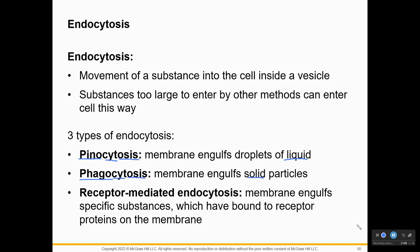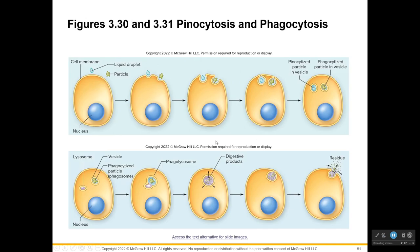Receptor-mediated endocytosis is where the membrane engulfs a specific substance because a receptor signals that it's needed nearby. In pinocytosis, liquid outside the membrane is taken in and forms a little vesicle that holds that fluid. If a solid particle is brought in, it's called phagocytosis. What happens to that vesicle — what we might call a food vacuole? A lysosome can be added to break it down. For example, if a white blood cell eats a deadly bacterium, it adds a lysosome to break it down and then gets rid of the waste.